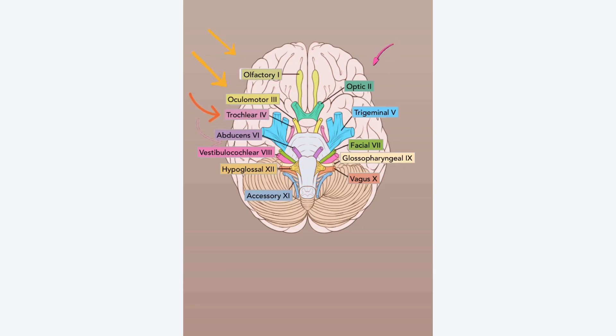Five: trigeminal, so three branches. One: ophthalmic. Two: maxillary. Three: mandibular. So sensation, mastication. Seven: facial expression. Eight: vestibulocochlear, ears.